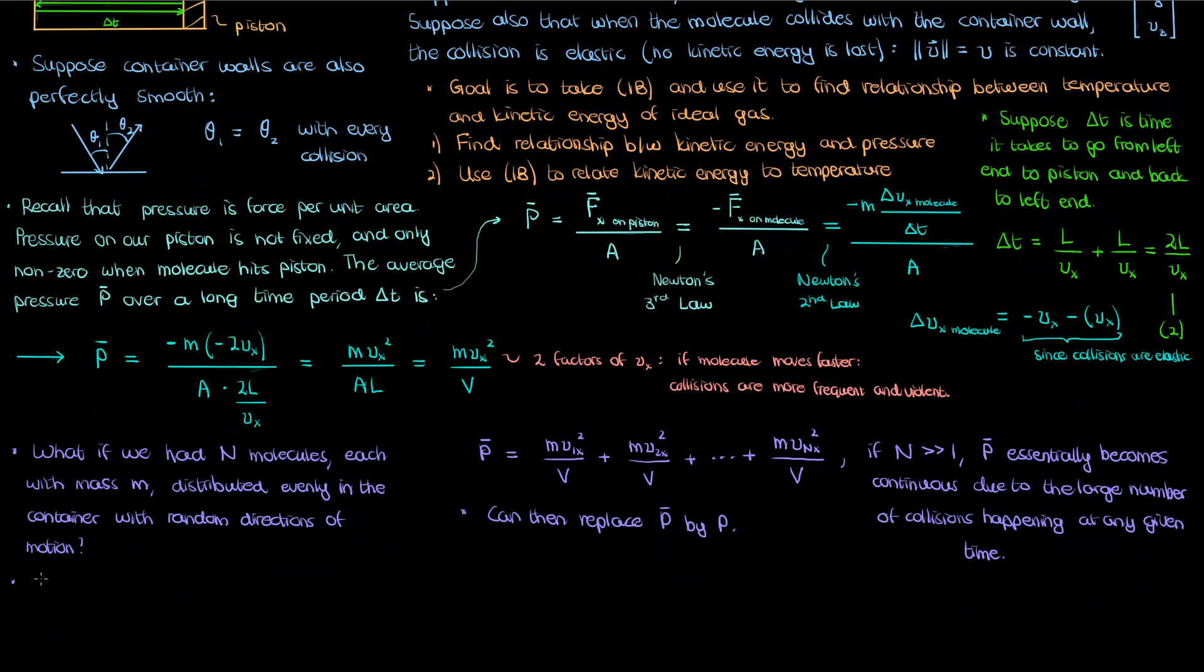So we can replace the p with the bar with just regular p. The other thing we'll do is now average the squared x velocities of all our molecules by writing the sum of squares of these individual velocities as the average squared velocity v sub x squared with a bar times the number of molecules capital N. This is just straight up how you calculate a mean. You then plug this into the pressure equation and get the following.